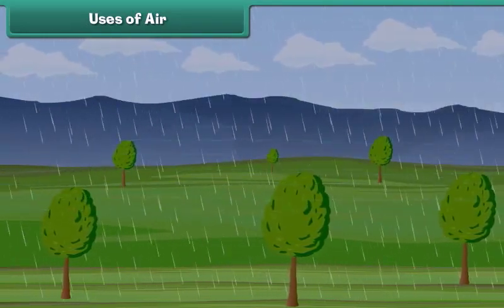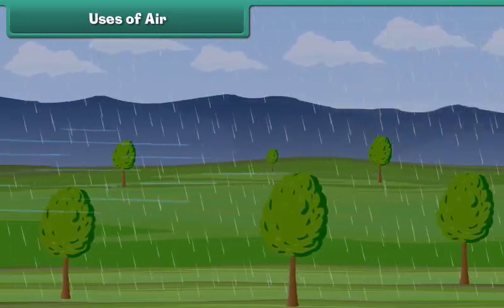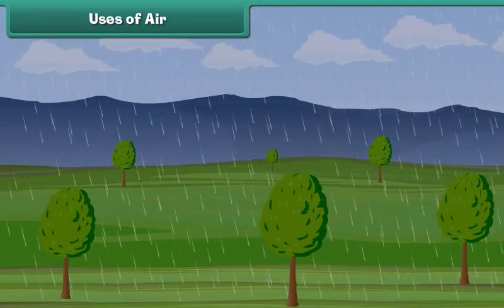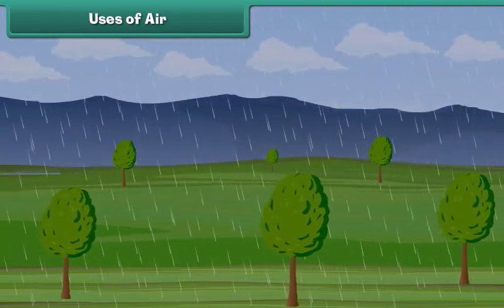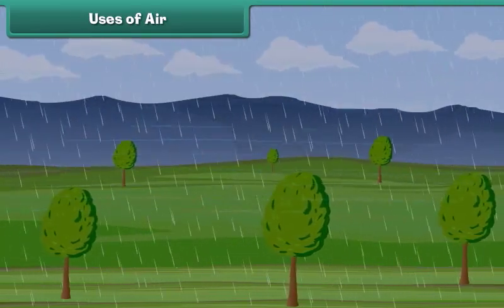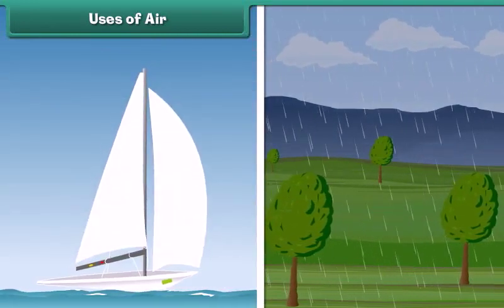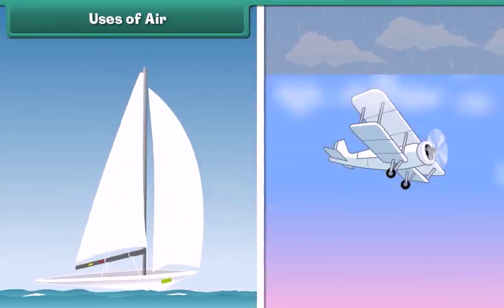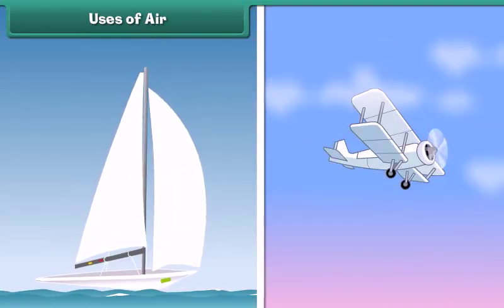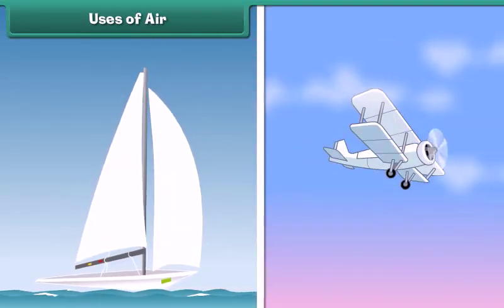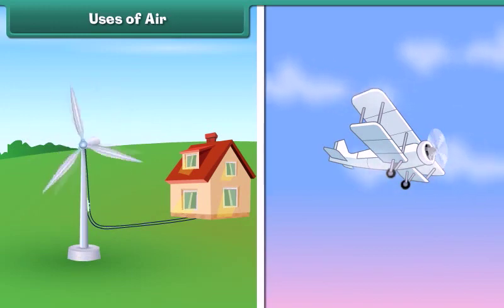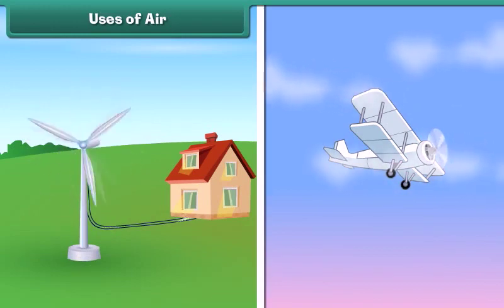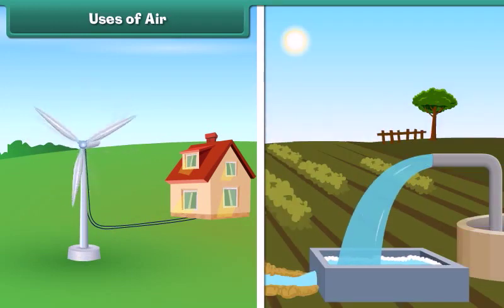Moving air is known as wind. Wind moves clouds and causes rain, and it helps sailboats and gliders to move. The power of wind is also used to generate electricity and to pump water.